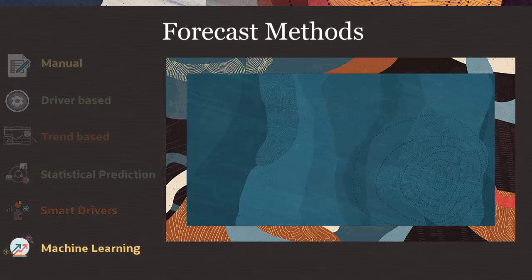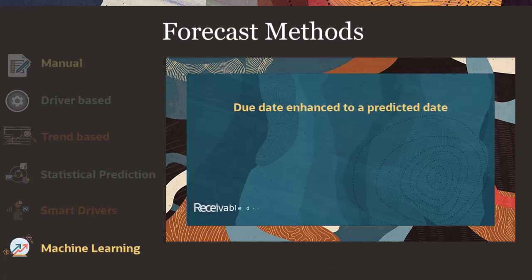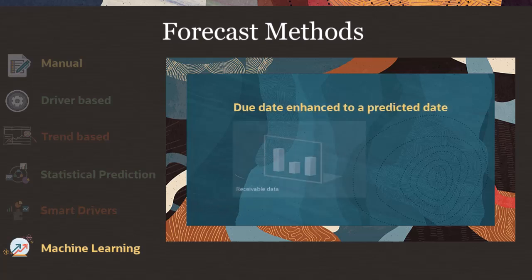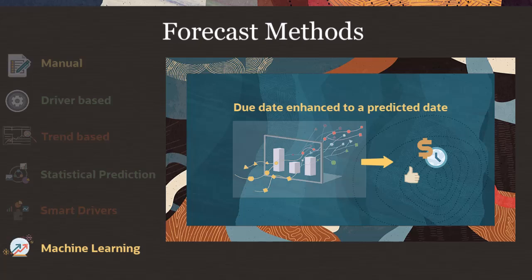Machine learning as a prediction model expands the smart drivers approach by applying machine learning on top of your receivables data. This method predicts whether receivables will be received on time or if they will be delayed, and based on that, forecasts the cash flows.